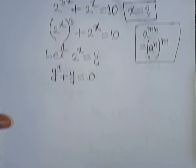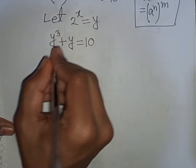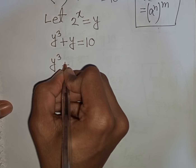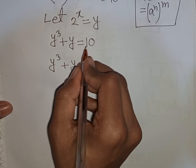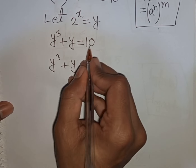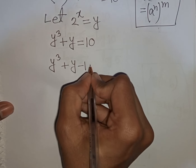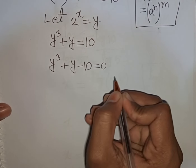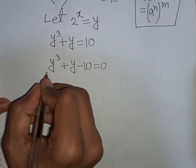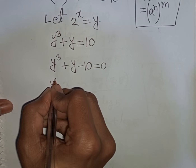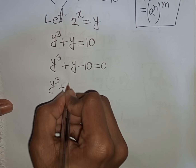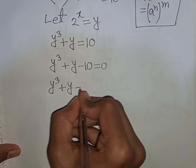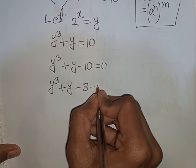Now we can write y cubed plus y, then bring 10 to the left side, so this becomes minus 10, giving y cubed plus y minus 10 equals 0. We can split minus 10 as minus 8 minus 2.